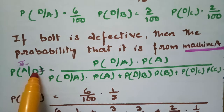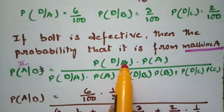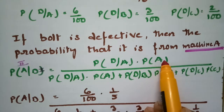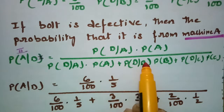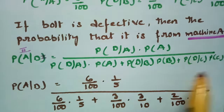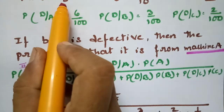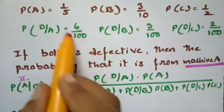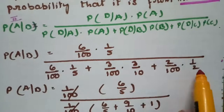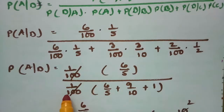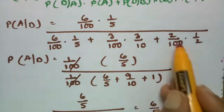According to Bayes theorem, P(A|D) = P(D|A) × P(A) divided by [P(D|A)×P(A) + P(D|B)×P(B) + P(D|C)×P(C)]. Substituting: numerator is 6/100 × 1/5. Denominator is 6/100 × 1/5 + 3/100 × 3/10 + 2/100 × 1/2. Taking 1/100 common, this becomes 6/5 divided by [6/5 + 9/10 + 1].